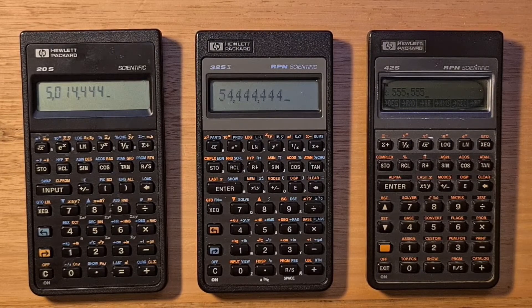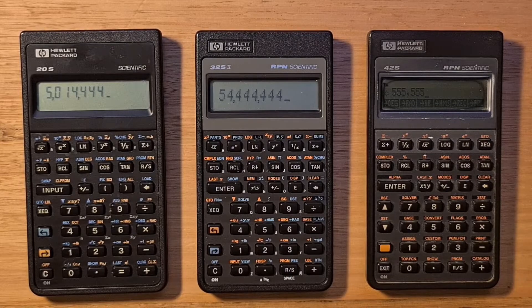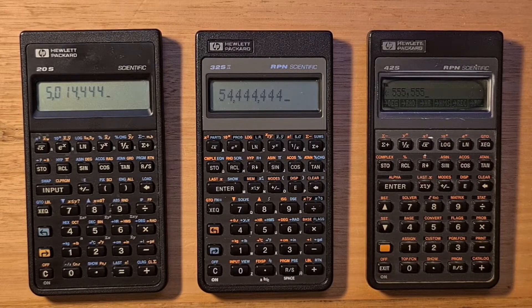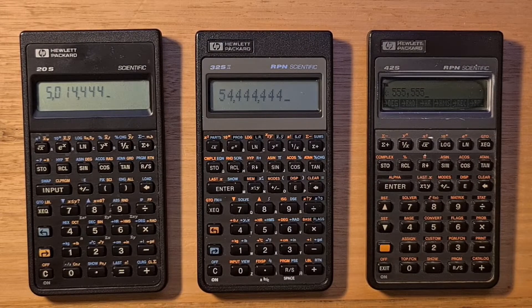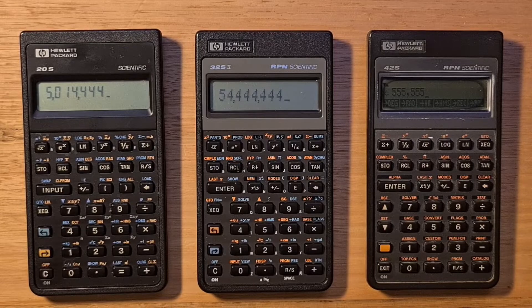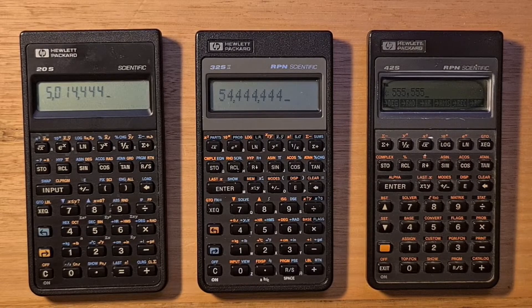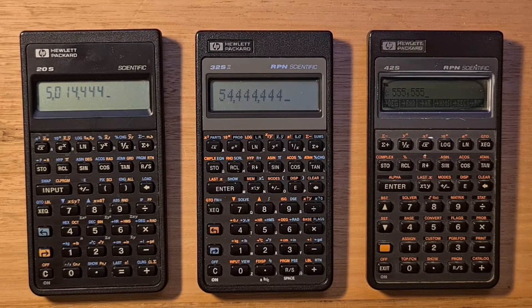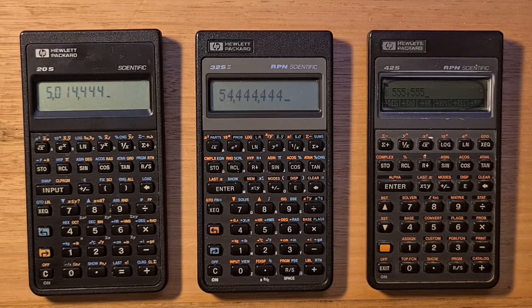HP used three versions of its own Saturn processors in the Pioneers. The 32S2 used the mid-level Sacajawea version with 16K ROM and 512 bytes of RAM, of which 384 were able to be accessed by the user.